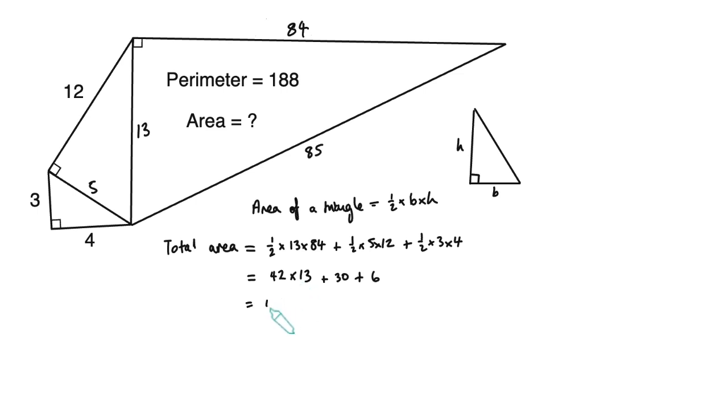Doing this without a calculator, we can say 42 lots of 13 is 42 times 10, which is 420, and 42 times 3, which is 126. So if we add all those together, we get our final answer here, which is 582.